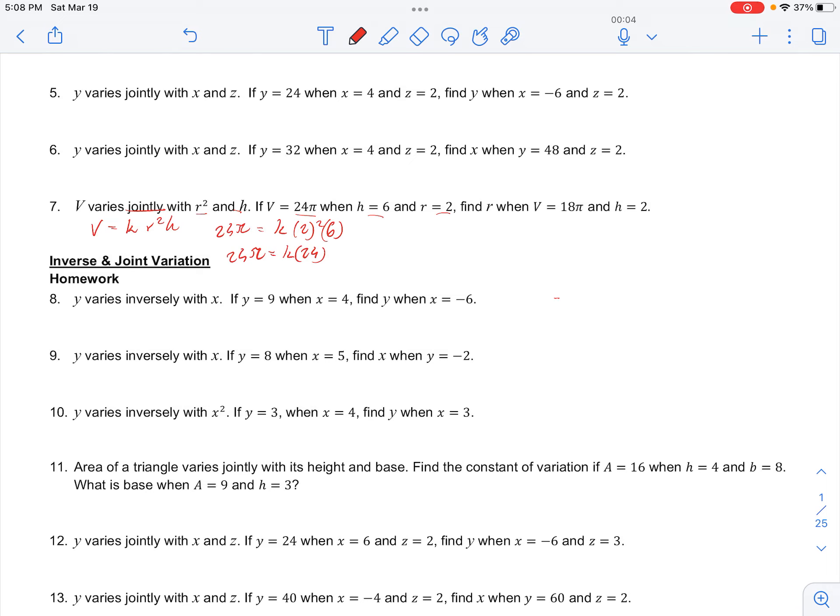So dividing by 24 on both sides, k is equal to pi. Now we can rewrite our relationship as v equals pi r squared h, which is the volume of a cylinder.